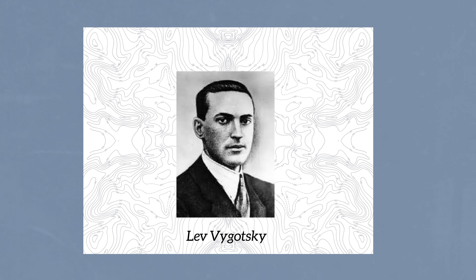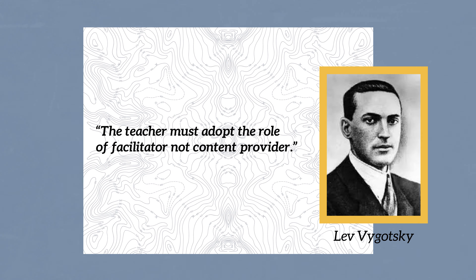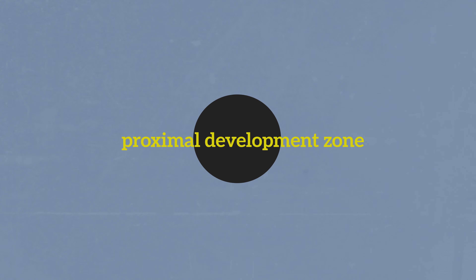The social aspect of learning was explored in depth by Lev Vygotsky, reflected in social learning practices such as peer teaching and group work. This connects to his idea of the zone of proximal development. There are certain things a person can do by themselves without any help, and some things they cannot do even with help. But there is a zone in between where, with help, a person is able to accomplish something.